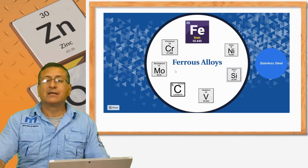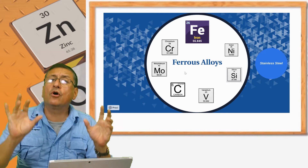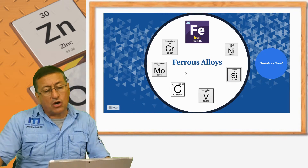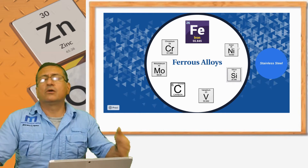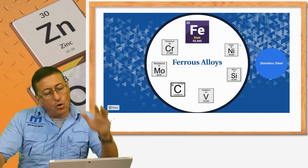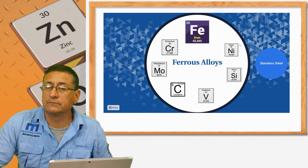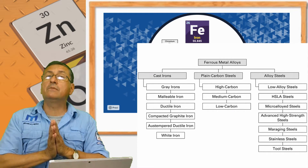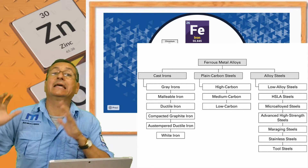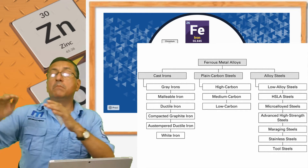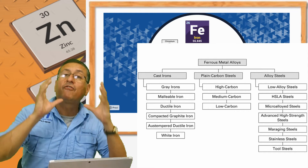The ferrous alloys are alloys based on iron with other ingredients like chromium, molybdenum, carbon, vanadium, silica, nickel, and others. Those are the most important contents in ferrous alloys. Remember that ferrous alloys are divided into cast irons and steels, and the steels are divided into low carbon, medium carbon, and high carbon steels.